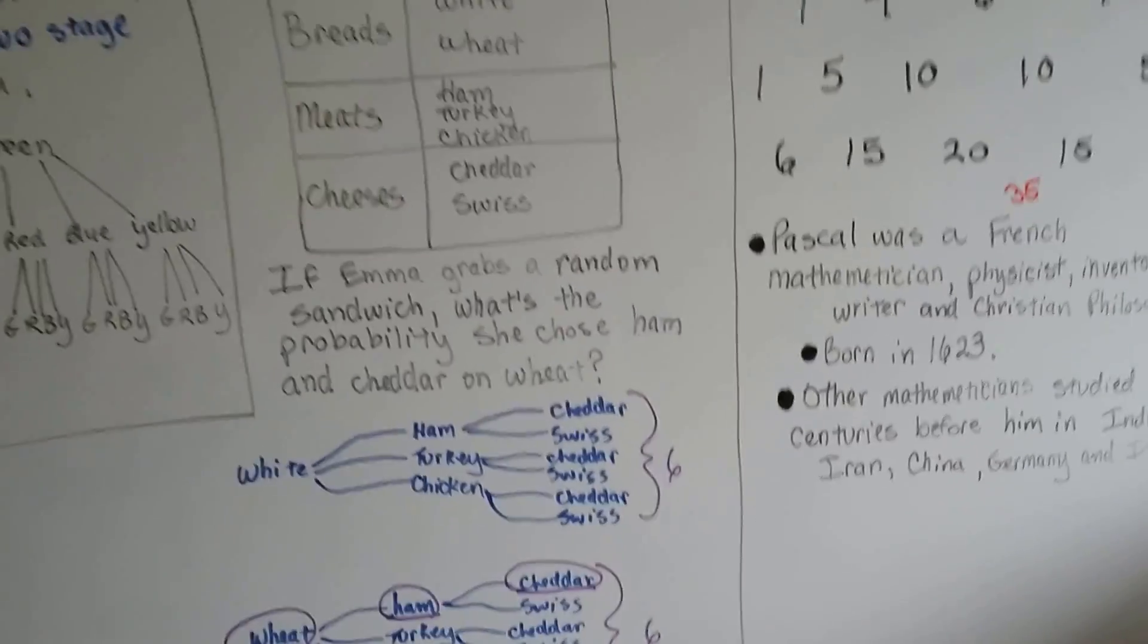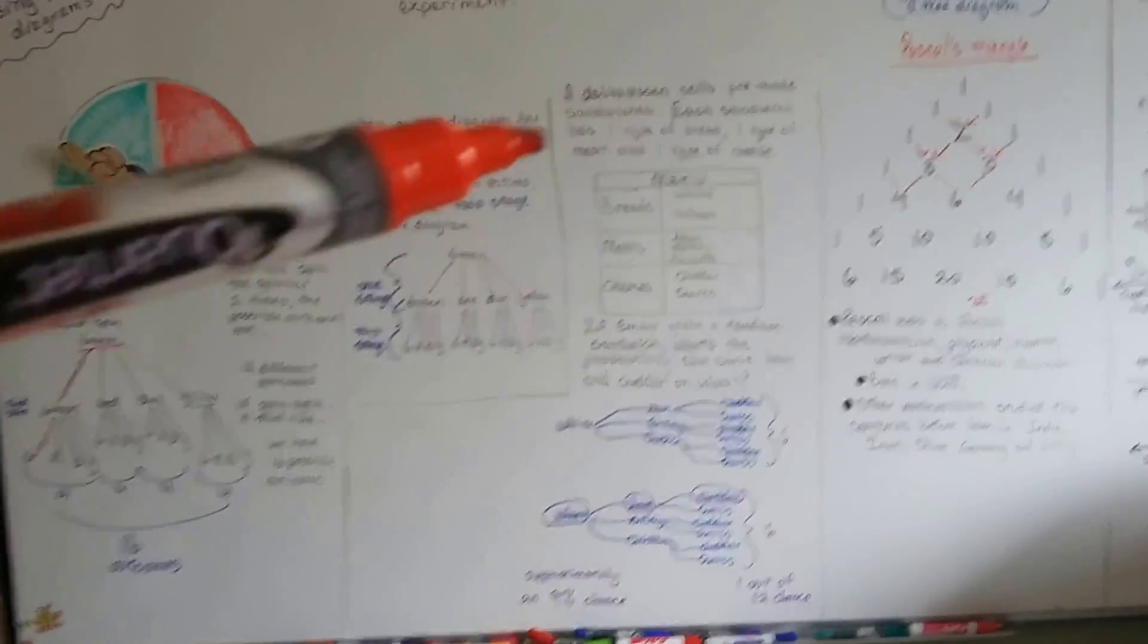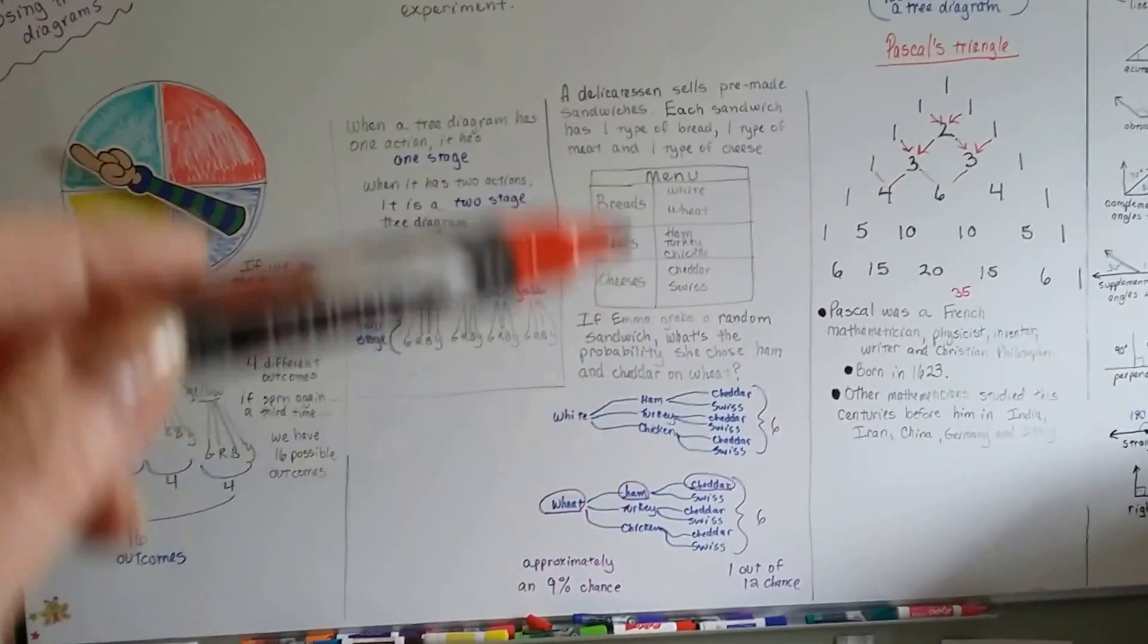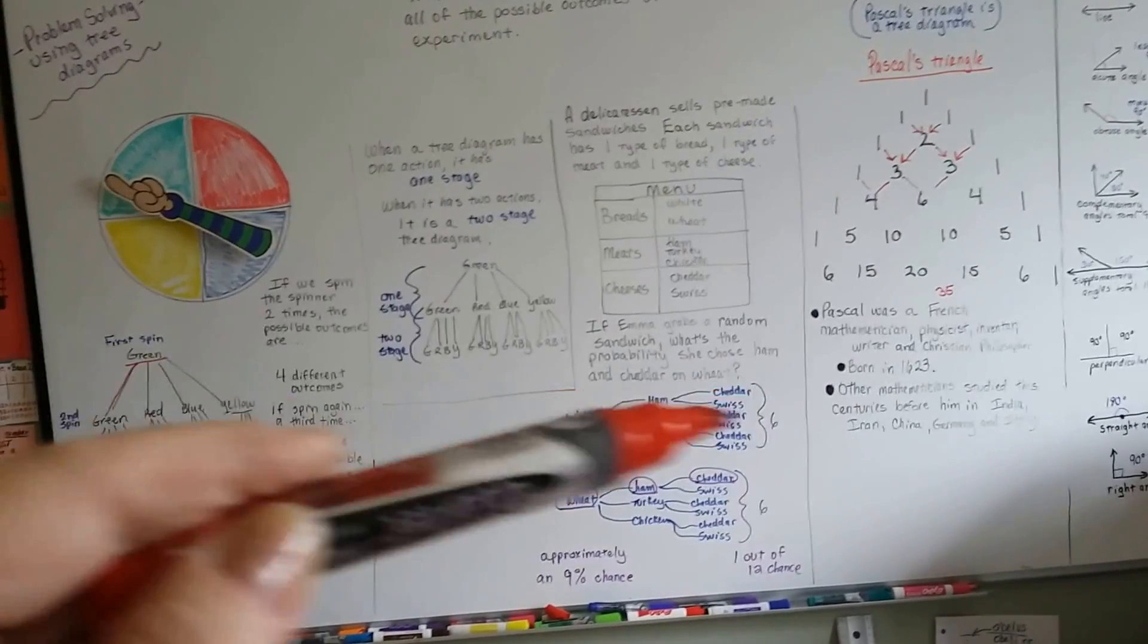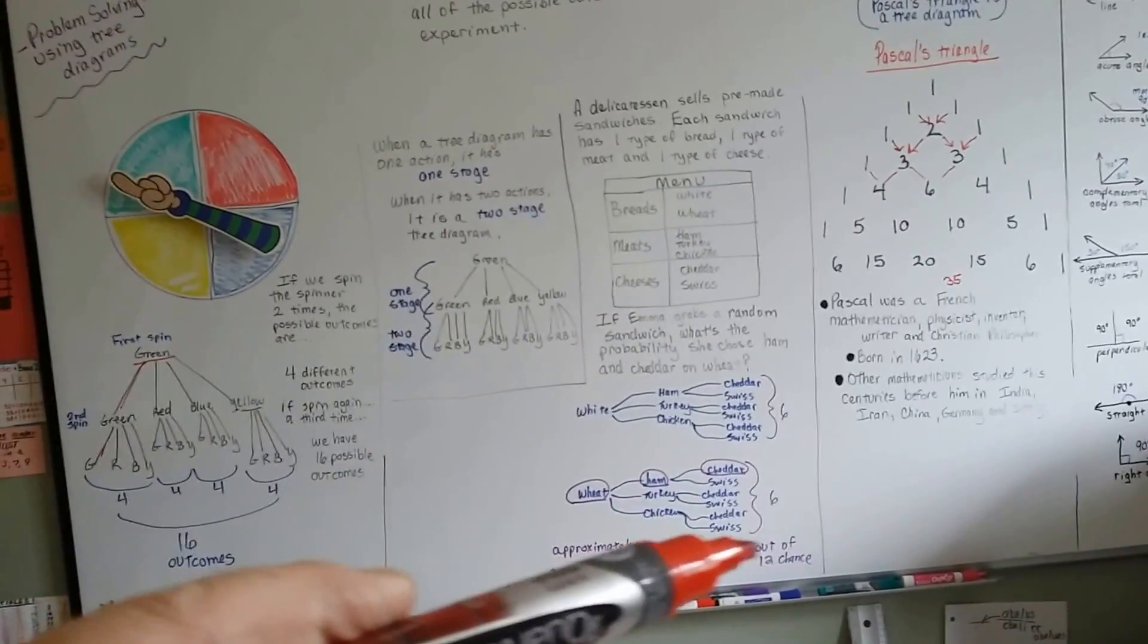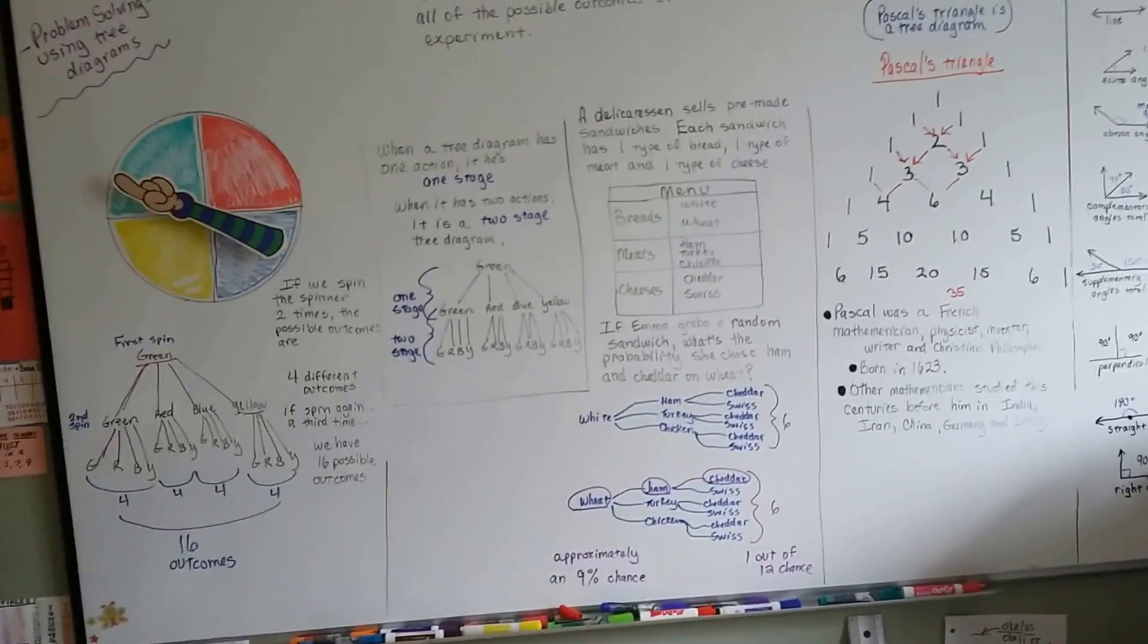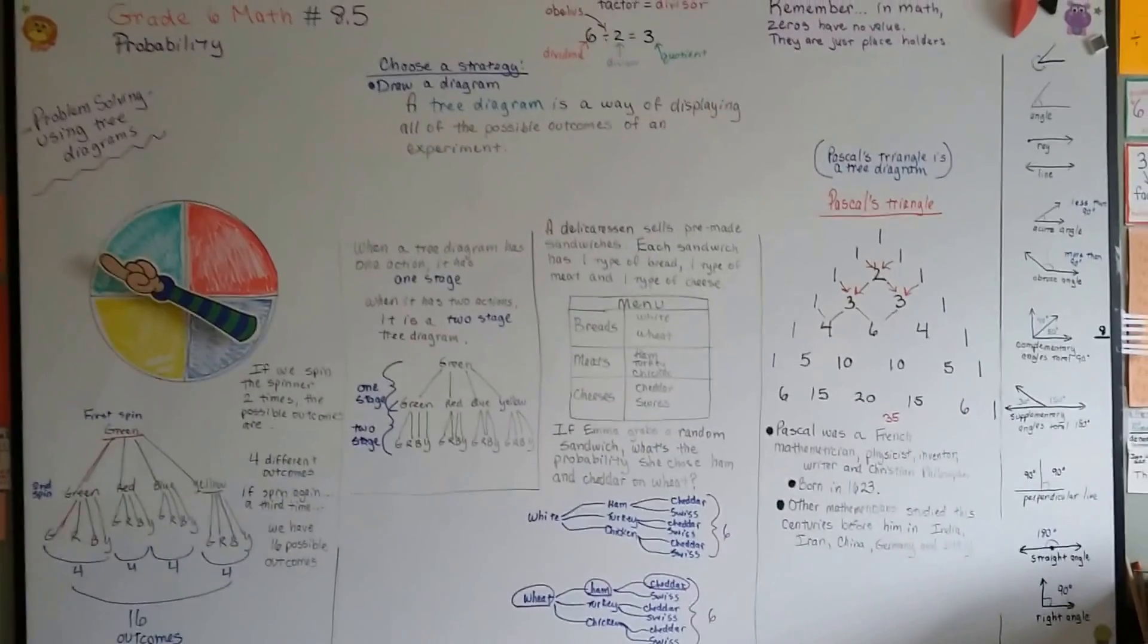So that is a tree diagram. That's how you use it. If you have a word problem and you need to figure out the chance of something, make yourself a tree diagram and then slowly make the branches going across. Count how many branches there are and then you know that it's a one out of that many branches chance, see? Not very hard at all. You could do this, okay?